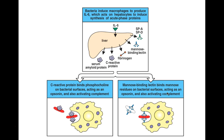On the bottom left, we see that CRP is going to bind to particular phospholipids on the bacterial cell surface. CRP is going to act like an opsonin that's going to facilitate better or improved phagocytosis of the bacteria.